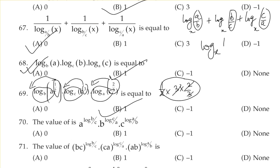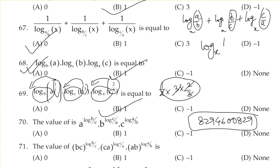Questions 70 and 71 are cyclic order, so the answer should be 1. If it's not 1, discuss why. If doubt remains, you can ask me on WhatsApp at 829-4600-829 — only for WhatsApp, do not call. Thank you so much for watching this video. Happy learning, bye bye, good night.